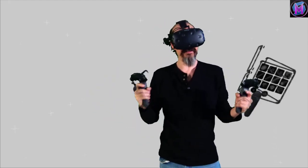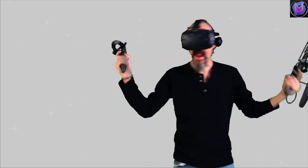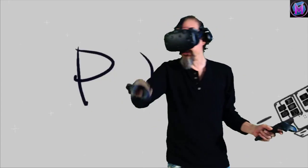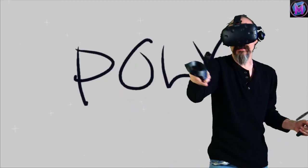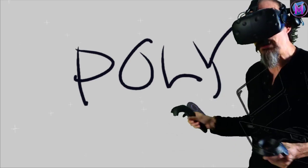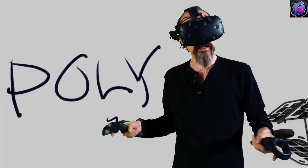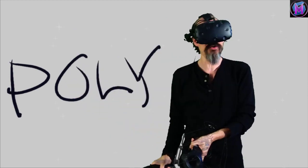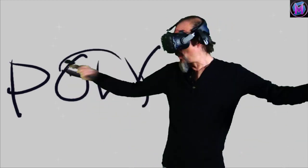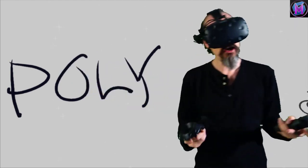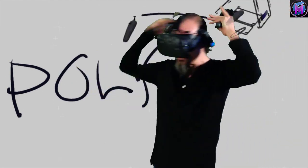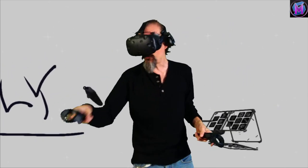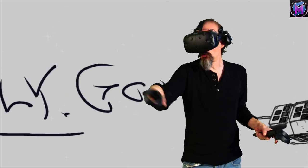Hey everybody, we are teaching Tilt Brush, and in this episode we're going to be using the Poly Library. The Poly Library is a great way not only to get your own sketches out to the world, but we can get models and objects into our sketches to work with, and also remix and share sketches with other people. This is going to involve the internet and can be found at poly.google.com.